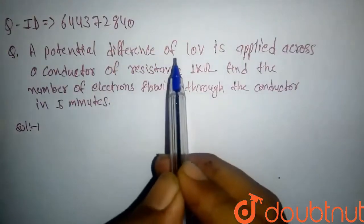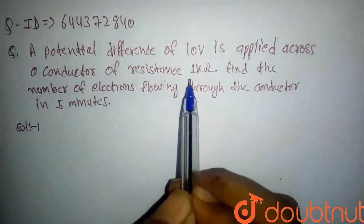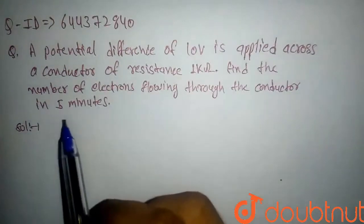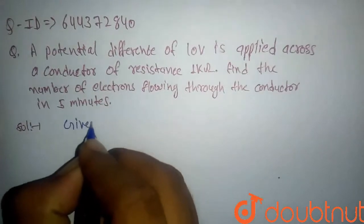A potential difference of 10 volts is applied across a conductor of resistance 1 kilo-ohm. Find the number of electrons flowing through the conductor in 5 minutes. So first, we will write the given data.